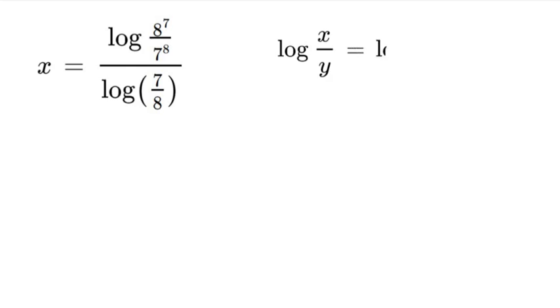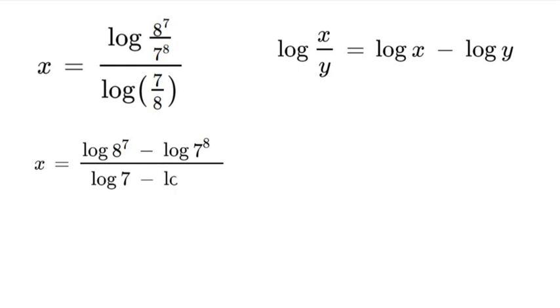So now we can use another log property. If we have log x over y that is the same thing as log x minus log y. Now let's apply that to our equation. We'll have x equals log 8^7 minus log 7^8, and then log 7 minus log 8.